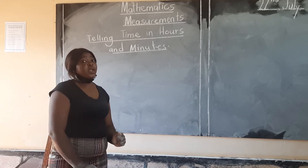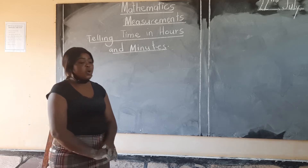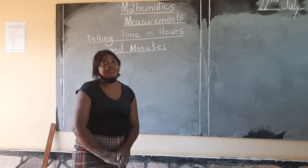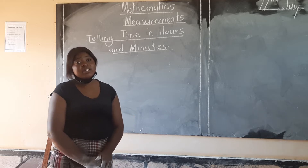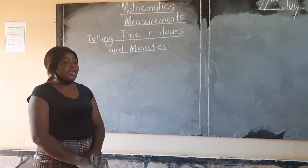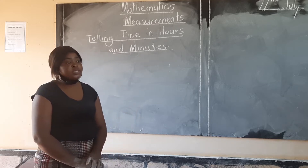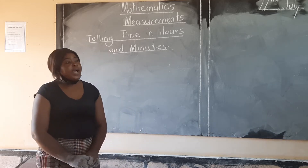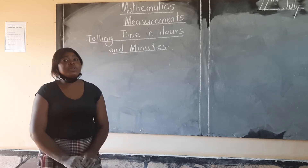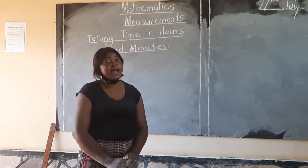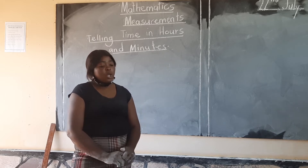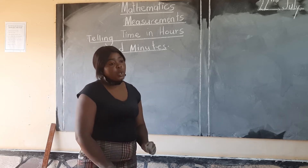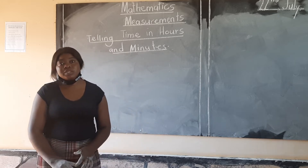Tell me, what does the short hand on the clock show? The short hand on the clock is the hour hand — it shows hours. And then the long hand shows minutes, it is the minute hand. And there are other clocks that have three hands; the longest hand on the clock shows seconds.